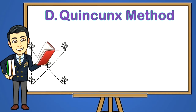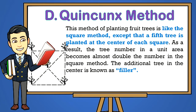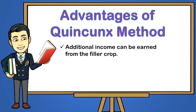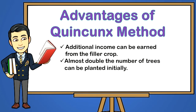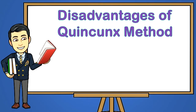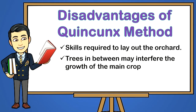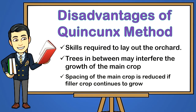D — Quincunx Method. This method of planting fruit trees is like the square method except that a fifth tree is planted at the center of each square. As a result, the tree number in a unit area becomes almost double the number in the square method. The additional tree in the center is known as a filler. Advantages: one, additional income can be earned from the filler crop; two, almost double the number of trees can be planted initially; three, full use of land is possible. Disadvantages: one, skills required to lay out the orchard; two, trees in between may interfere with the growth of the main crop; three, spacing of the main crop is reduced as the filler crop continues to grow.